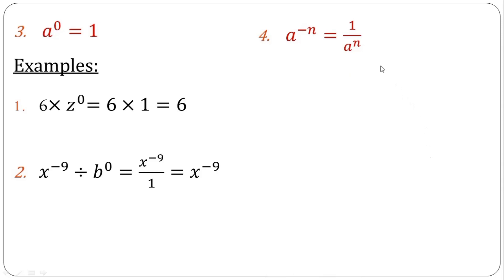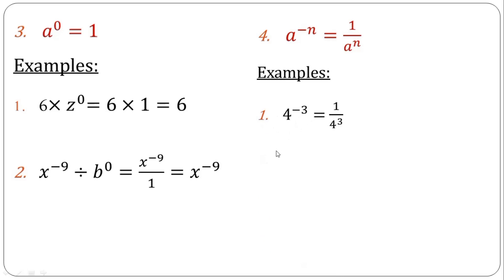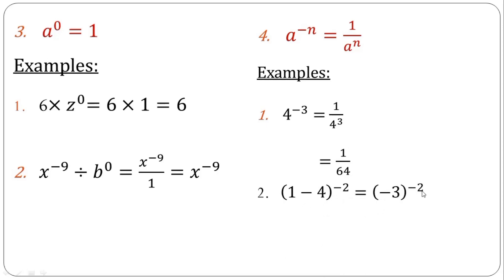The fourth rule is called the negative index rule. When you have a negative power, that minus turns to 1 all over — the reciprocal of the same number but now with a positive power. For example, 4 raised to the power of minus 3 becomes 1 over 4 raised to the power of positive 3. Since 4^3 is 64, this becomes 1 over 64. In example 2, we have 1 minus 4 raised to the power of minus 2, which gives minus 3 raised to the power of minus 2. Applying the negative index rule gives 1 over (minus 3)^2, and since (minus 3)^2 equals 9, the answer is 1 over 9.